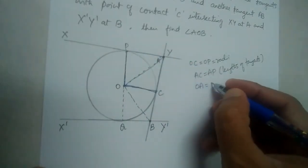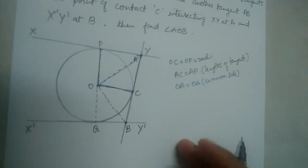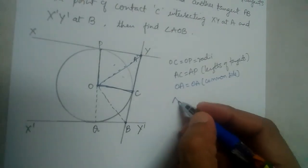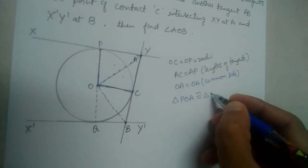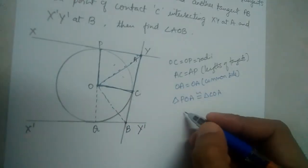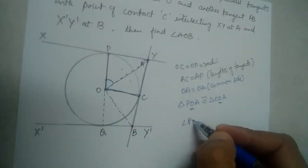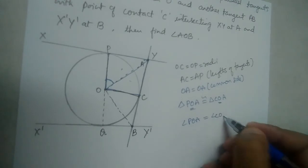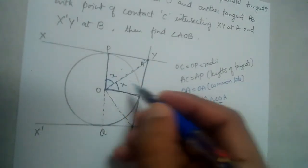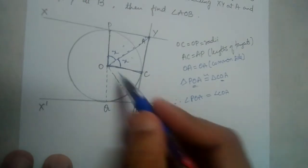OA is a common side, so OA equals OA. These two triangles are congruent: triangle POA is congruent to triangle COA. That means angle POA equals angle COA. Let us take that angle as x, so angle POA = x and angle COA = x.